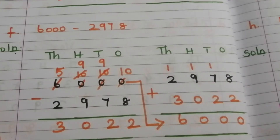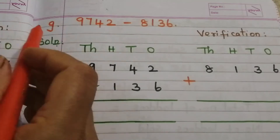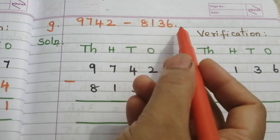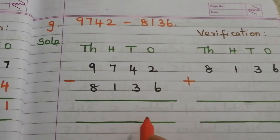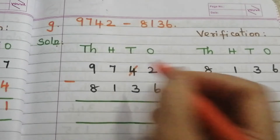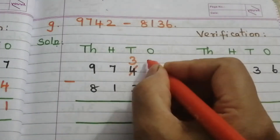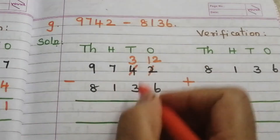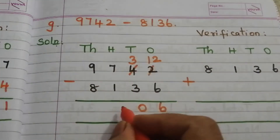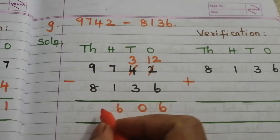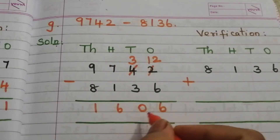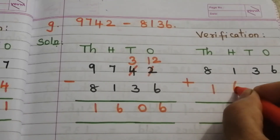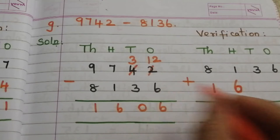Problem G: 9742 minus 8136. Start from ones place. We can't subtract 6 from 2, so borrow: 3 becomes 2 and 2 becomes 12. 12 minus 6 is 6. 2 minus 3 — wait, 3 minus 3 is 0. 7 minus 1 is 6. 9 minus 8 is 1. So the answer is 1606. To verify, we add this difference to the subtrahend.